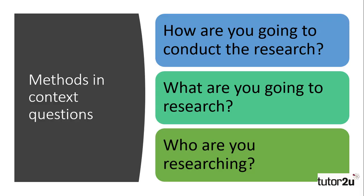First of all, you need to have knowledge of how you are going to conduct the research, so you need to know the strengths and limitations of the different methods. Secondly, you need to know what you are going to research, so knowledge and understanding of the different issues in education section is important. Finally, you need to know the characteristics of who you are researching and how they might react to being researched on a specific topic. That is the focus of this video — examining some of the practical, ethical and theoretical issues sociologists might face when researching pupils.